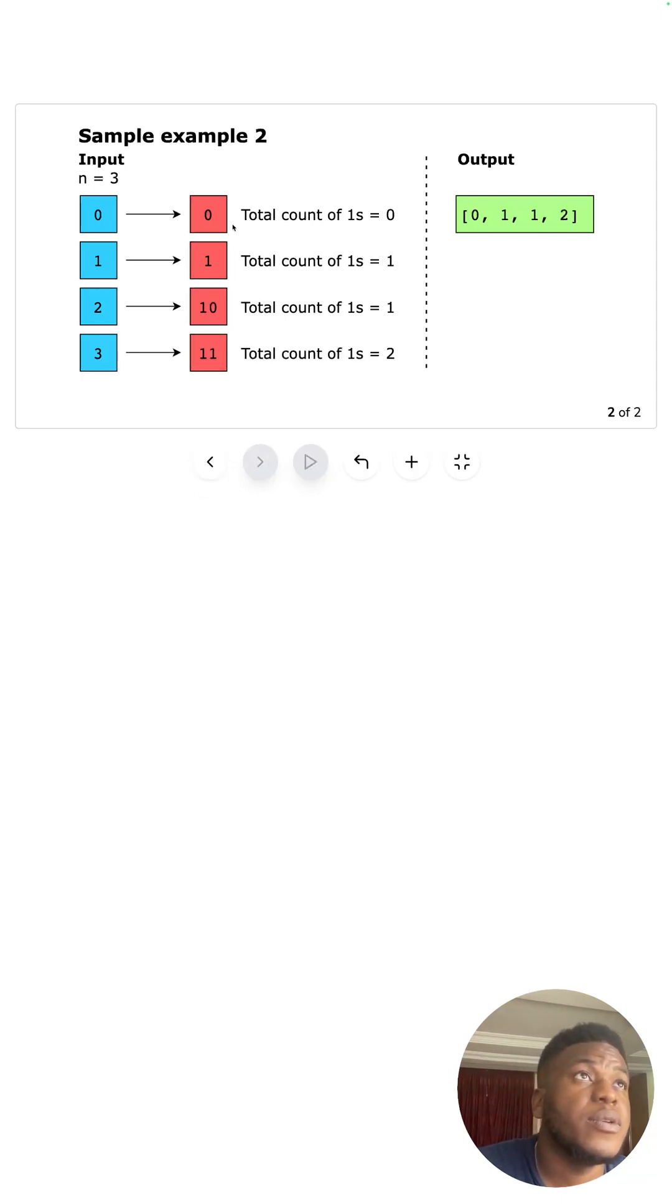For n=3, we go from 0 to 1 to 10 to 11. There's no one in zero, a single one there, a single one there, and two one digits here, so we update the array like that. That's the gist of this problem.